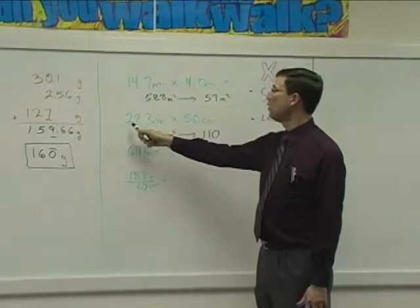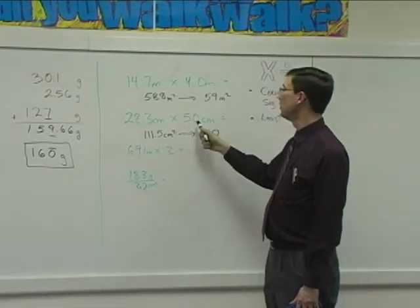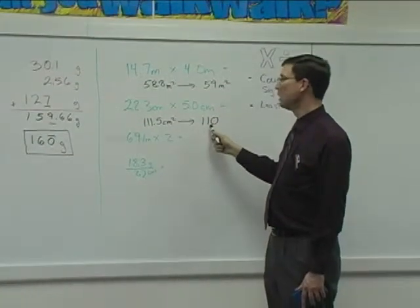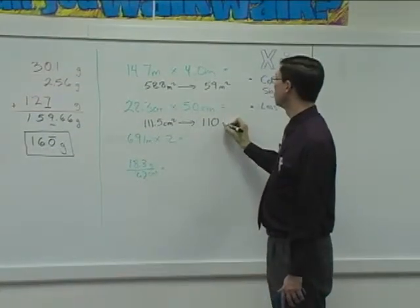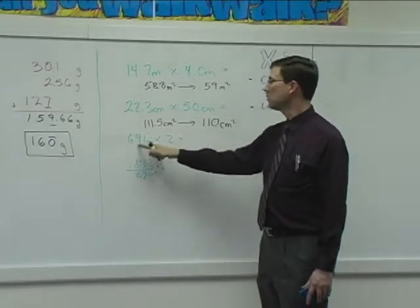So again, we're looking at how many significant figures we count them. We have three here. We have two significant figures here. So the final answer can only have two significant figures. Make sure you include the units as part of your answer in these measurements. Now let's take this one, 691 times two.